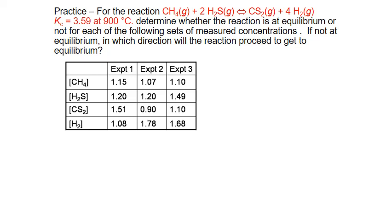Let's look at one more example. Here we'll look at the reaction between methane gas and hydrogen sulfide gas to produce carbon disulfide and hydrogen gas. We're given the equilibrium constant K_C at the temperature of our experiment, which is 900°C. We're asked to determine for three different trials whether these concentrations represent equilibrium concentrations, or if not, in which direction the reaction must proceed to get to equilibrium.